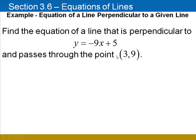Now, we'll find the equation of a line that's perpendicular to y equals negative 9x plus 5, and passes through the point (3, 9). This equation is in slope-intercept form, and so we know that negative 9 is the slope of that line.